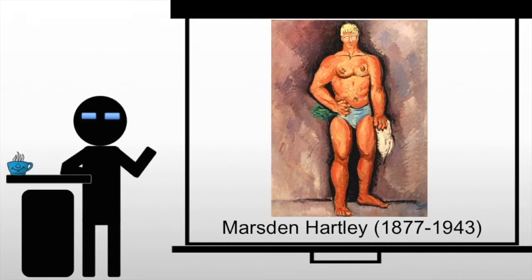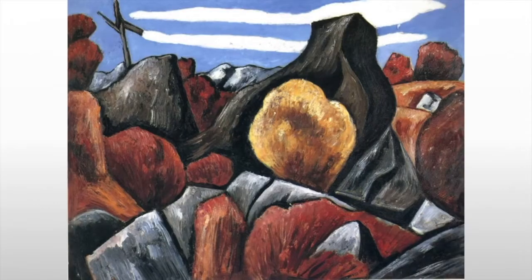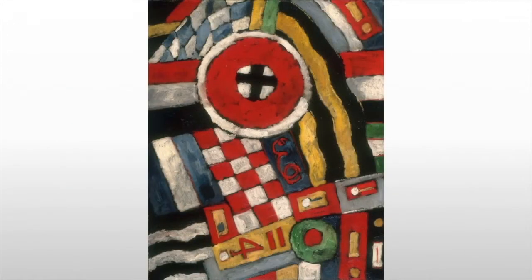Marsden Hartley traveled to Europe in 1912, and he would be taken by Cubism as well as by Kandinsky. He stays during the war and produces explorations of militarism, usually in somewhat abstract two-dimensional forms.